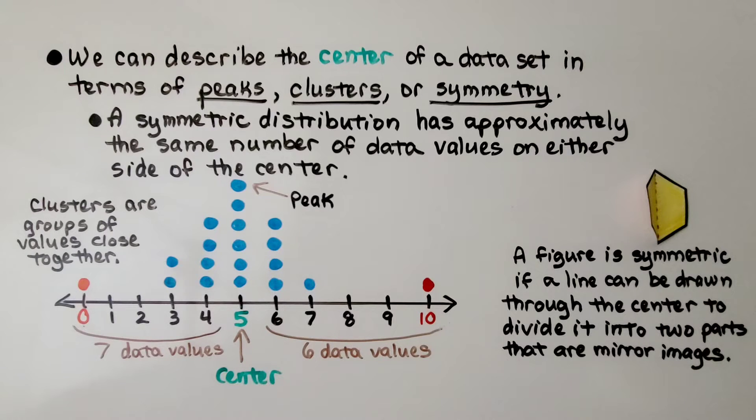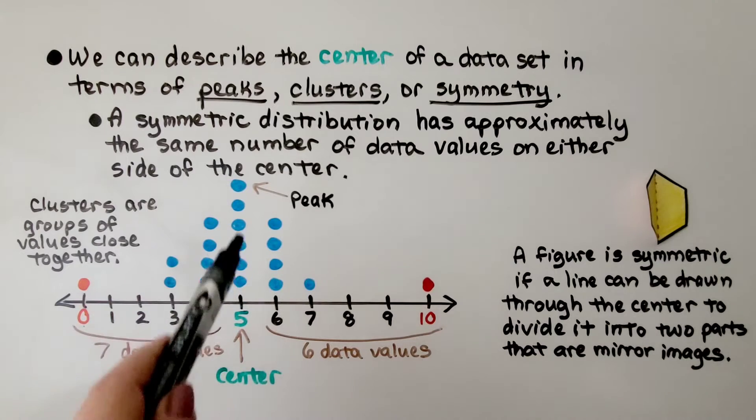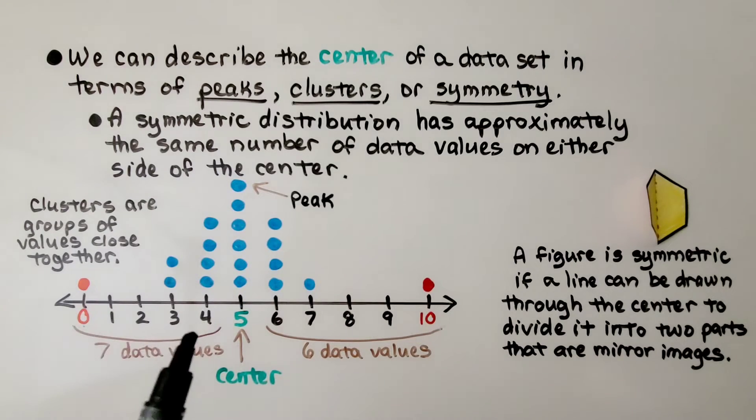We can describe the center of a data set in terms of peaks, clusters, or symmetry. A symmetric distribution has approximately the same number of data on either side of the center. So here is the peak, it is the highest one. And clusters are groups of values that are close together.